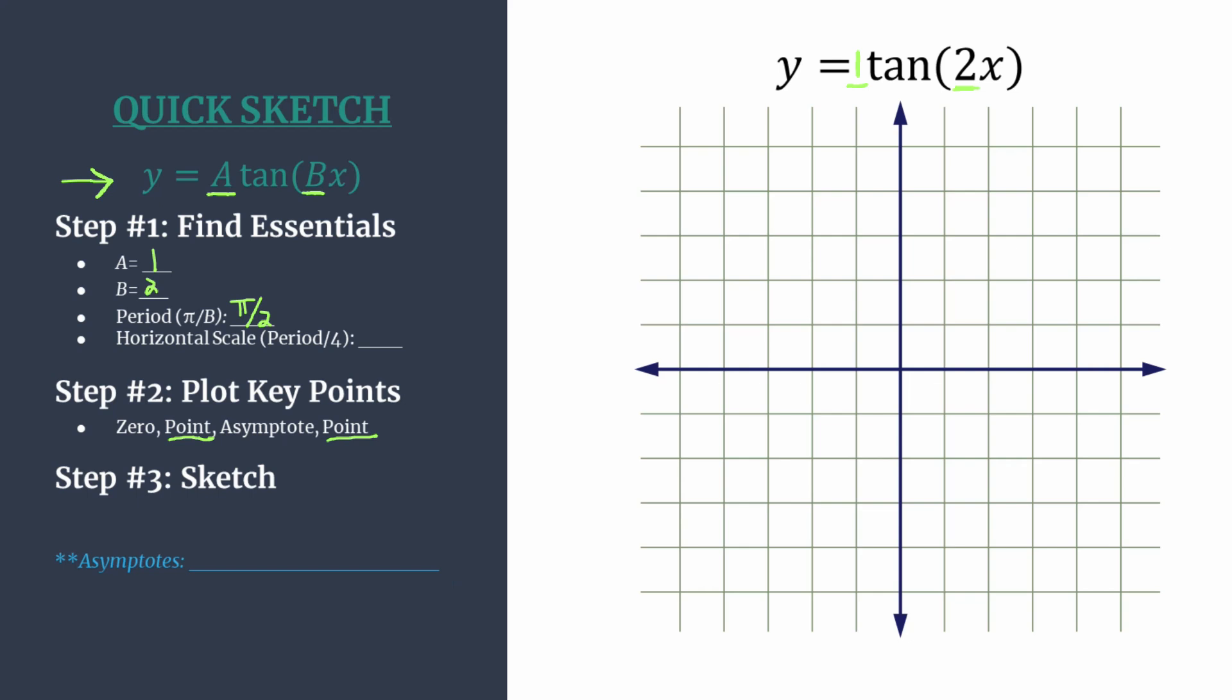Once I get the period I like to divide it by 4 and this will set the horizontal scale. So let's go ahead and do that. Pi over 2 divided by 4 is the same thing as multiplying by 1 fourth. So for the horizontal scale we'll count by pi over 8, and basically we just divided that period into four equal parts so that each of our key points in step 2 will line up nicely with these horizontal tick marks.